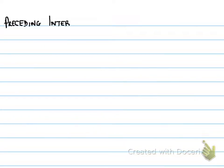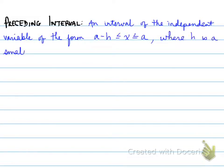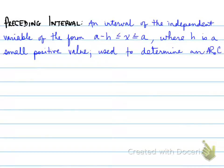A preceding interval is an interval of the independent variable of the form a minus h to a, where h is a small positive value used to determine an average rate of change. So preceding means we need to go 0.001 before the a value that you're looking for.